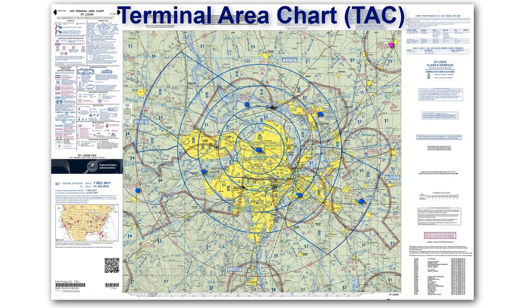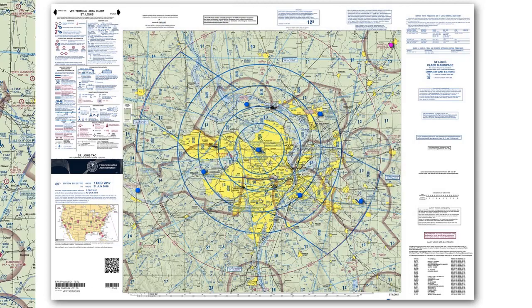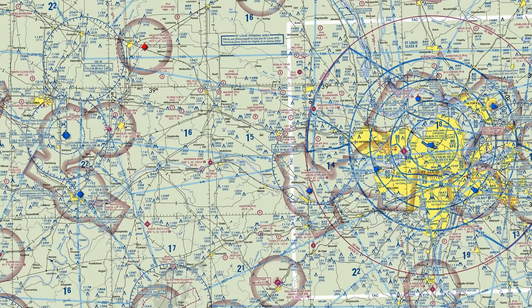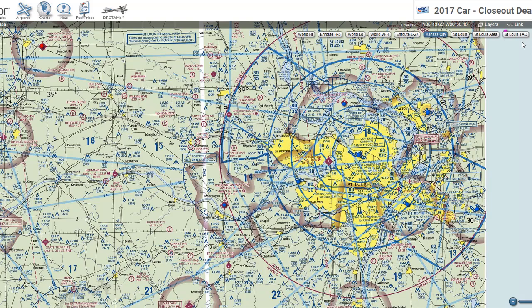The Terminal Area Chart, or TAC for short, is more detailed than the Sectional Chart and focuses on areas surrounding very busy airports — often these are Class B airports. If you look at a sectional chart, you will see a white border surrounding the airports indicating there is a corresponding TAC chart.